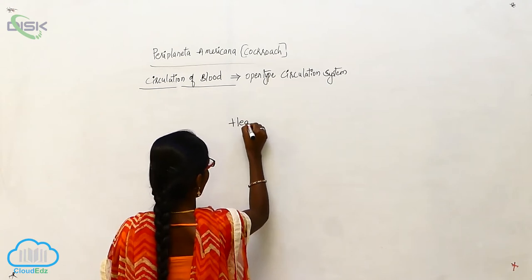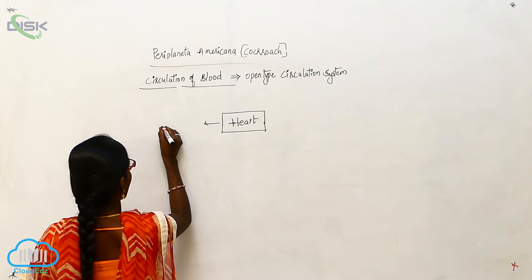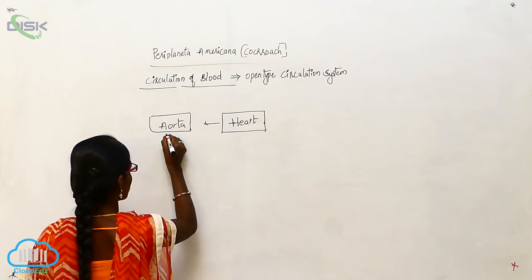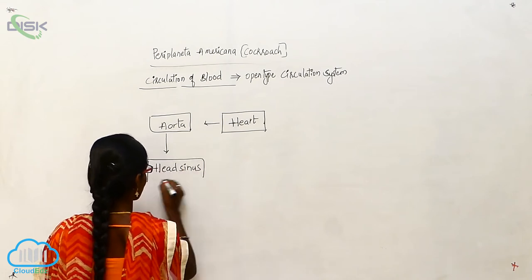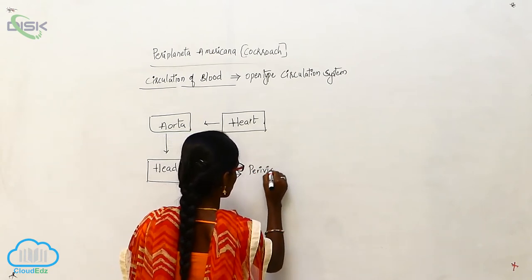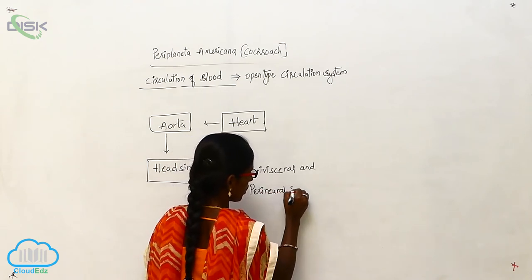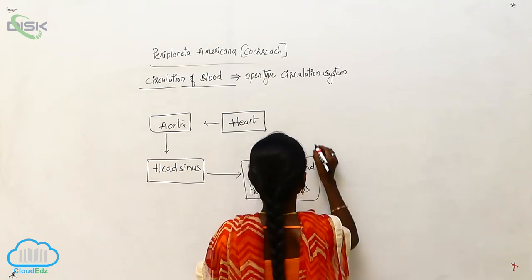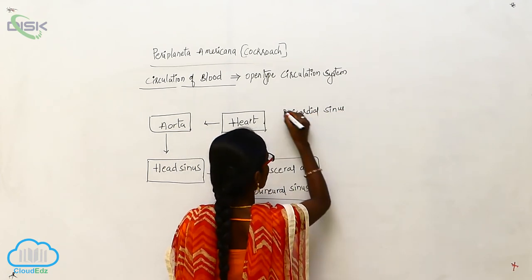From the heart, it will go to the aorta. From the aorta, it will go to the head sinus. From the head sinus, it will reach the perivisceral and perineural sinus. From this, it will go to the pericardial sinus.